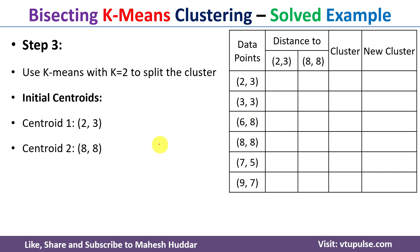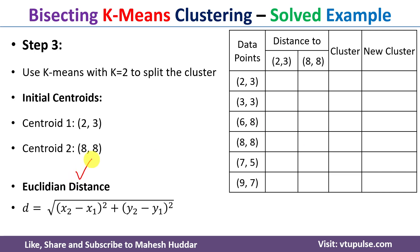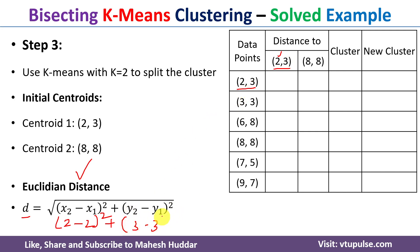To calculate the distance, as stated in the problem definition, we use the Euclidean distance formula: distance = √[(x₂ − x₁)² + (y₂ − y₁)²]. We calculate the distance from the first data point (2, 3) to centroid one (2, 3): √[(2−2)² + (3−3)²] = √0 = 0. So the distance is zero.